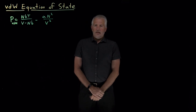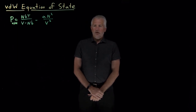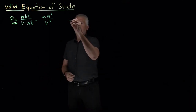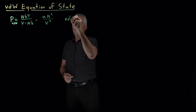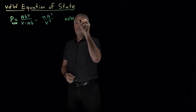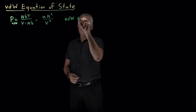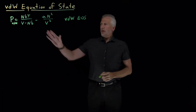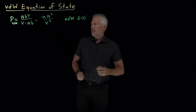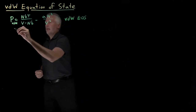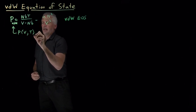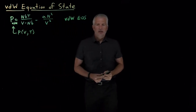We've seen that the pressure for a gas that obeys the Van der Waals model can be written with this equation — an equation we call the Van der Waals equation of state, sometimes abbreviated as EOS. The reason we call this an equation of state is because it describes how to calculate the pressure as a function of the volume and the temperature.